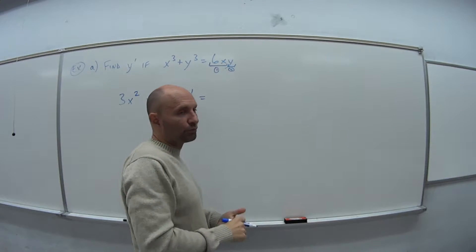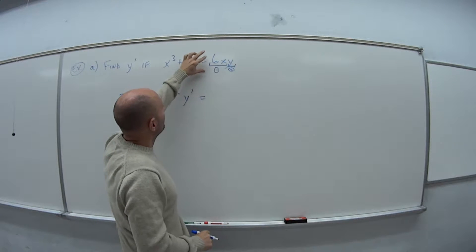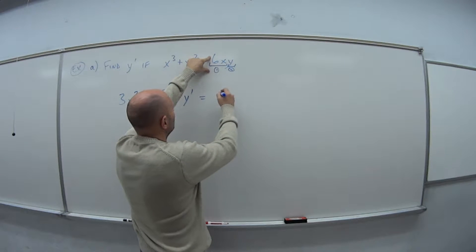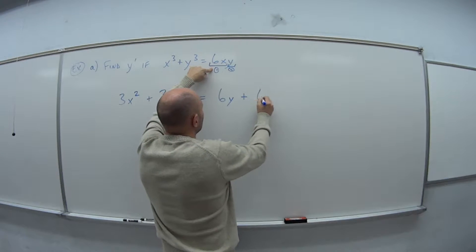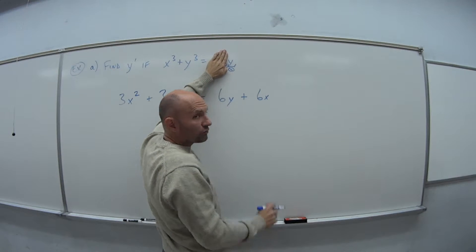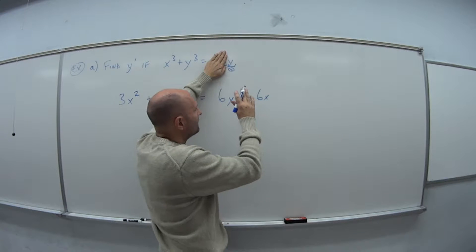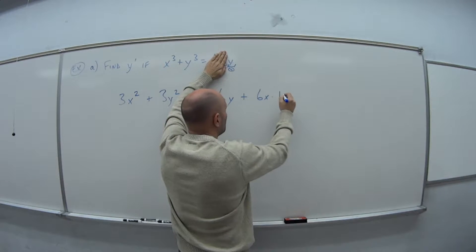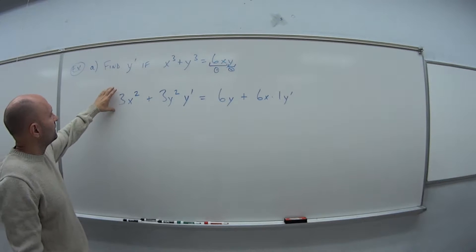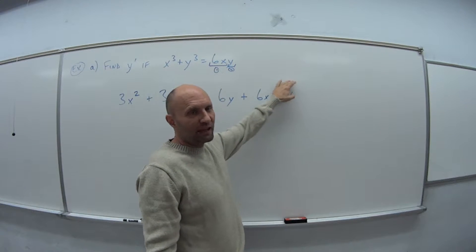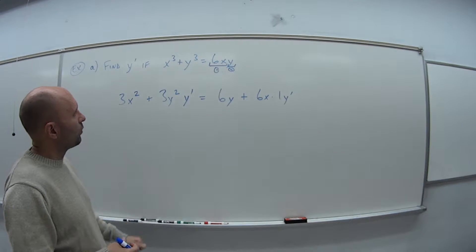The y is our second. So product rule is: derivative of the first times the second plus the first times the derivative of the second. So if I do that here, derivative of 6x is just 6 times the second, y, plus the first, 6x, times the derivative of the second. The derivative of y is 1, but because I'm taking the derivative of a y variable, it's basically times y times 1, but I have to put in this y prime. So if I take that implicit differentiation, this is the equation that I get.